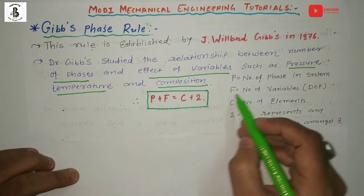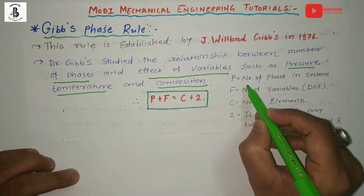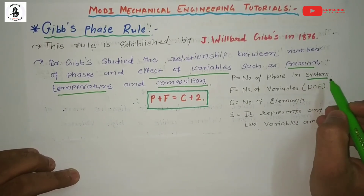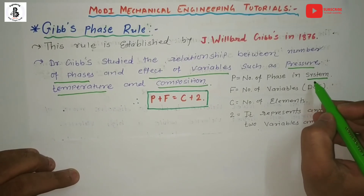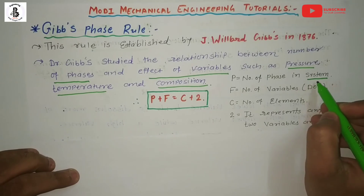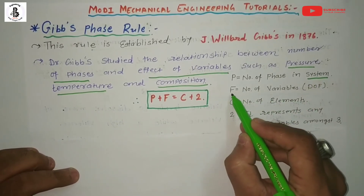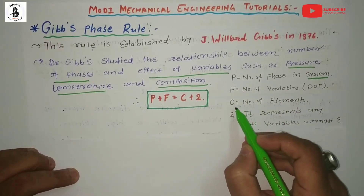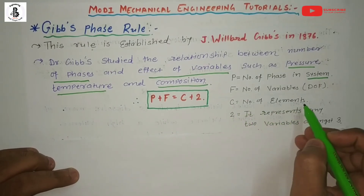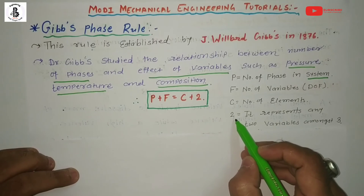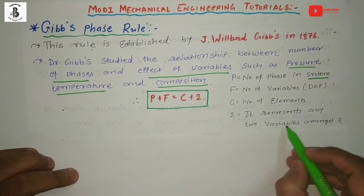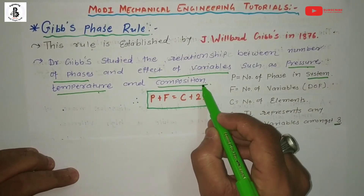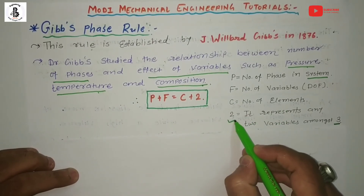In this notation, P represents the number of phases in the system. We already studied about systems in my previous lecture — a system is basically one kind of isolated body of matter. F represents the number of variables, or degree of freedom. Capital C represents the number of elements. The constant 2 comes from the three variables — pressure, temperature, and composition.